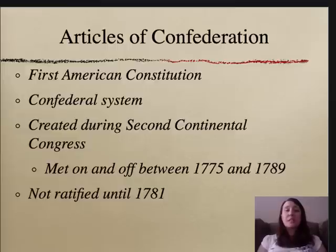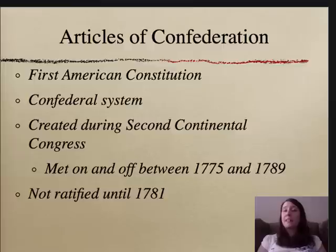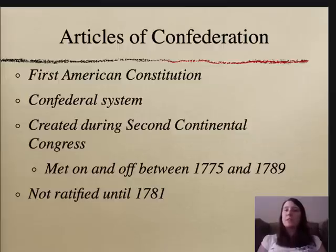The Articles of Confederation were the first American Constitution, and it was created during the Second Continental Congress, which met between 1775 and 1789. The Articles were ratified in 1781. The Articles also created a confederal type of government, meaning that the states in America worked together to make and enforce laws. However, those states retained their individual sovereignty.